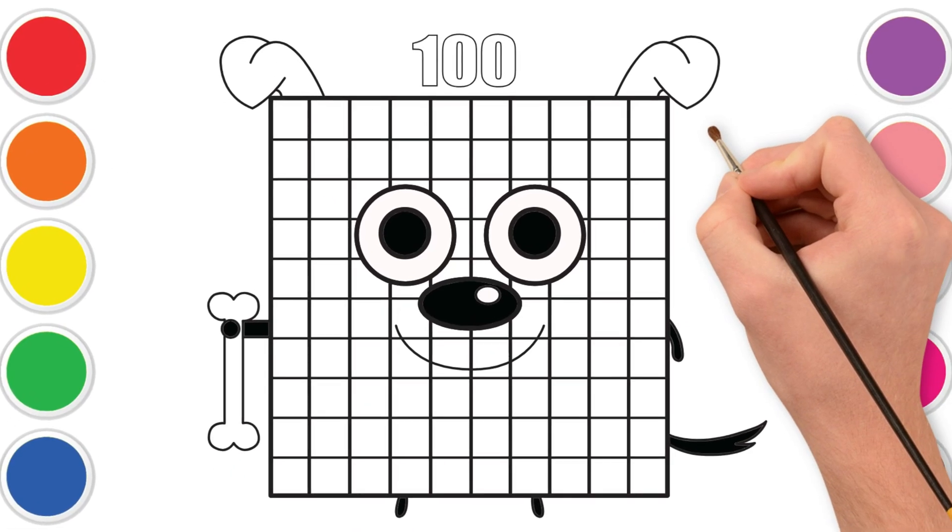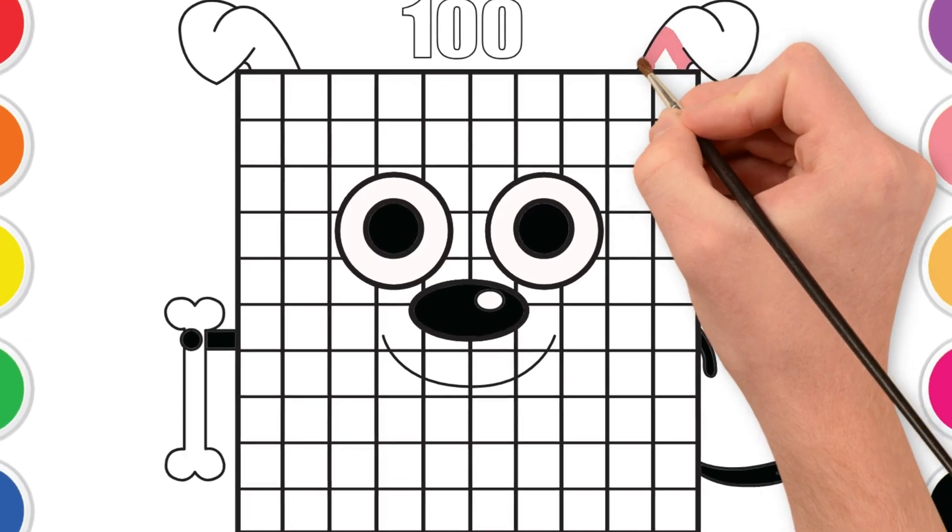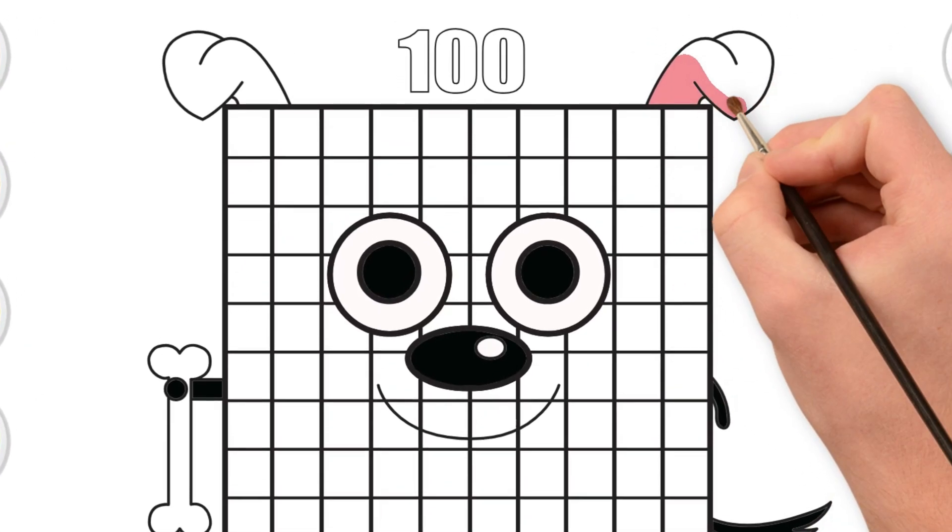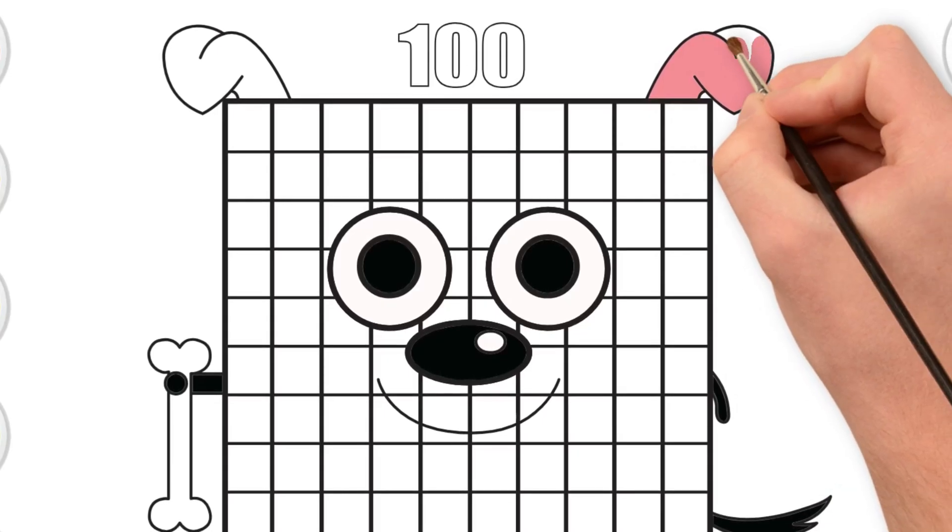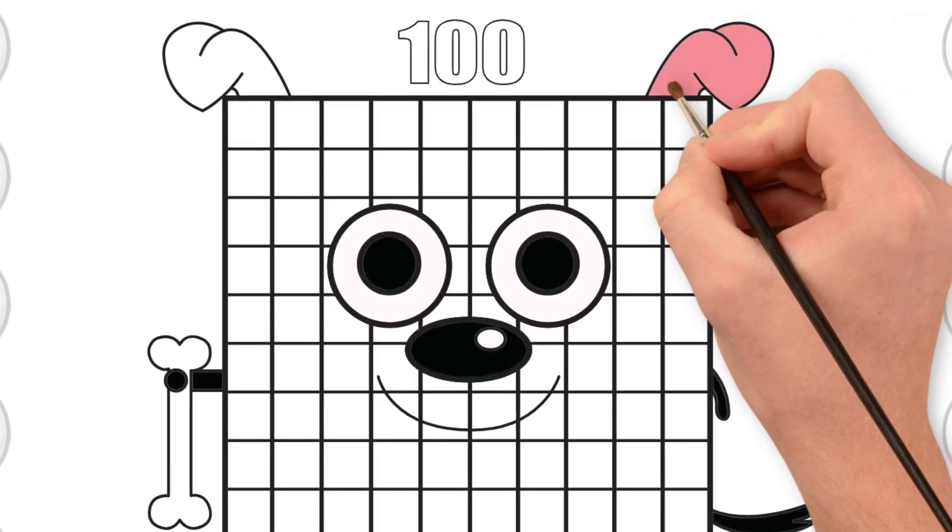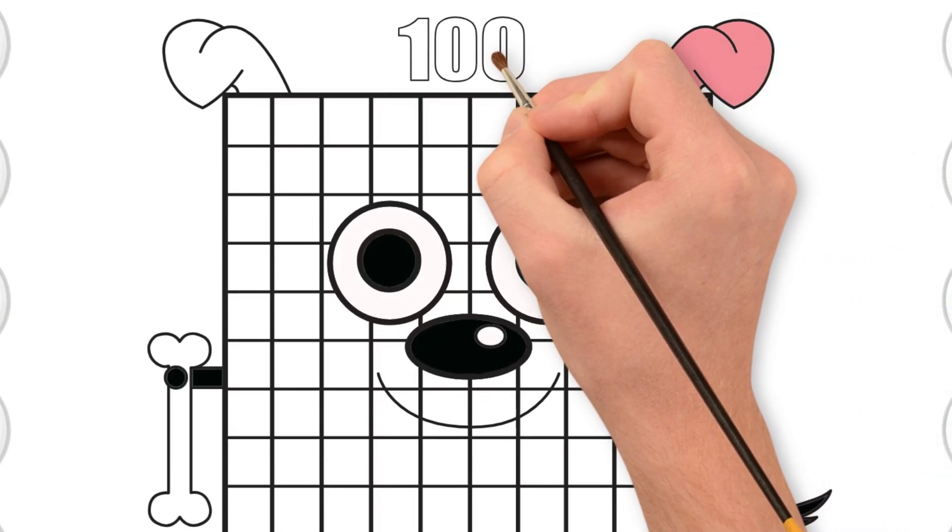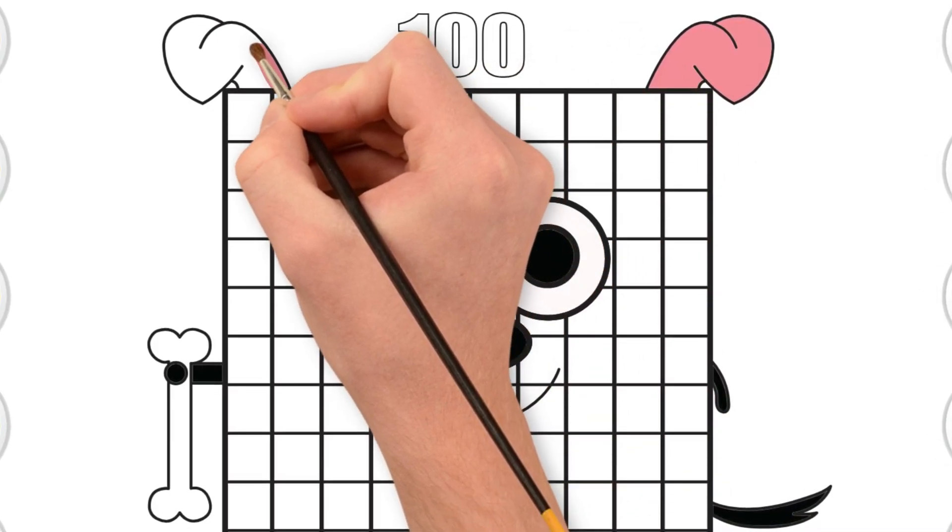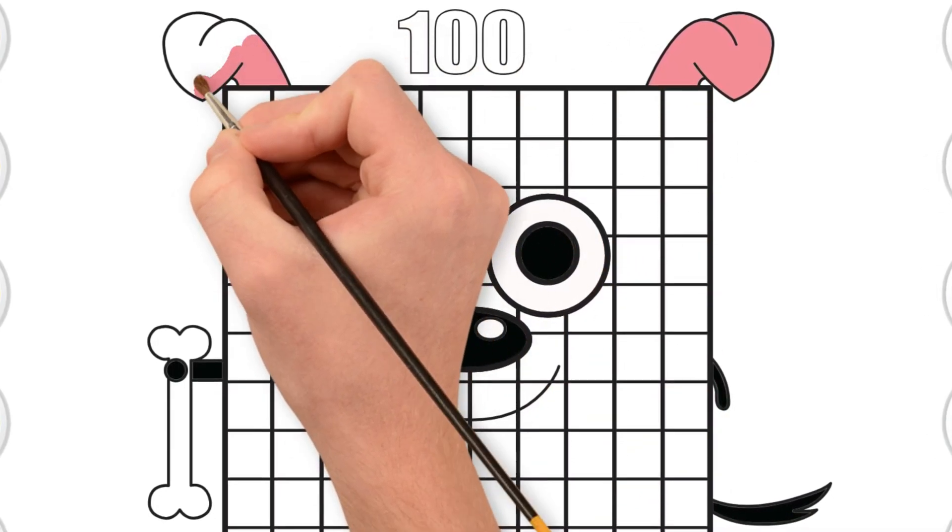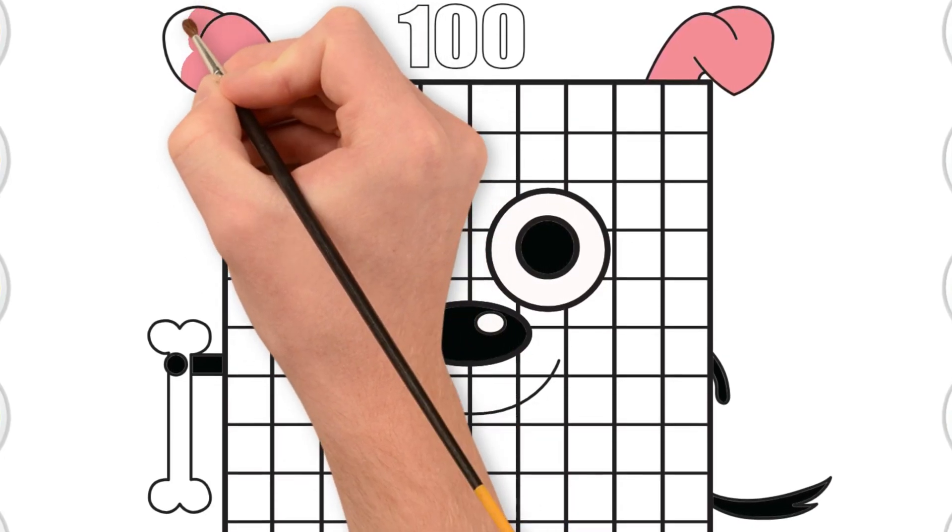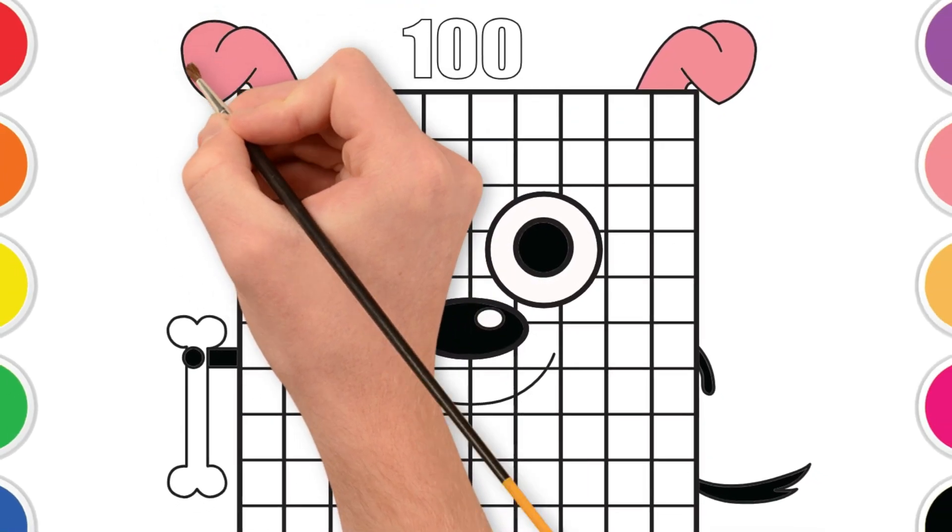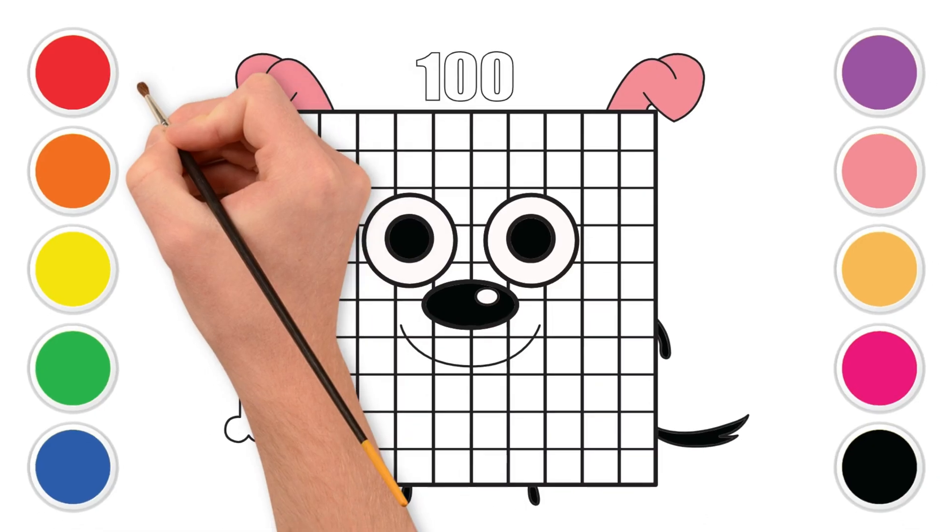Now, grab a light pink for the inside of his ears. Here comes the fun part. His colorful blocks.